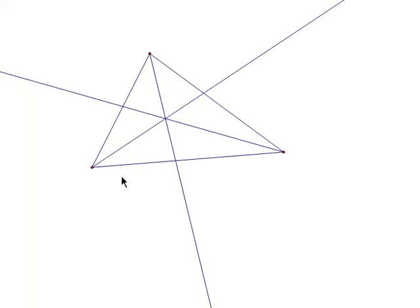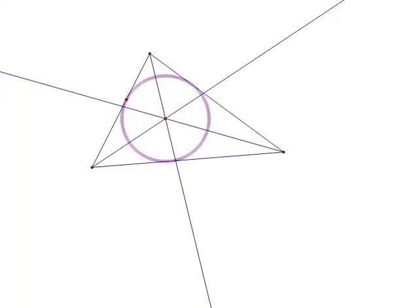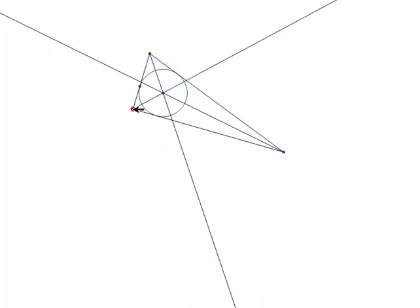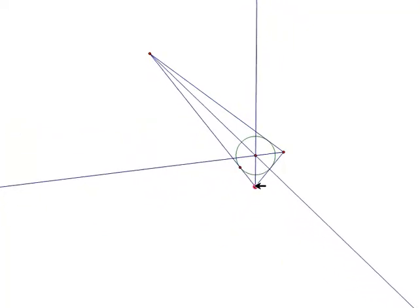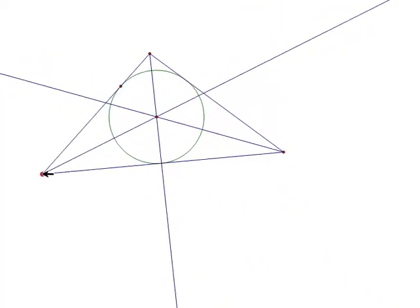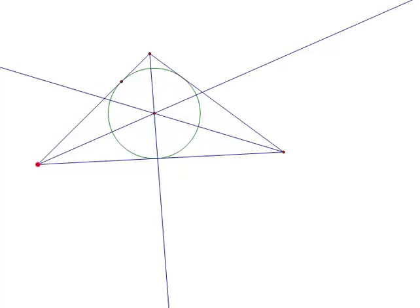There's something else interesting about this incenter point: the incenter is actually the center of a circle that intersects all three sides of the original triangle. I'm going to construct this circle now. Notice that it exactly hits all three sides of the triangle. No matter how you move the triangle around, that circle stays exactly inside the triangle and always touches all three sides. This means that the incenter is equidistant from all three sides of the triangle.